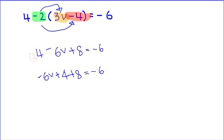So negative 6v plus 4 plus 8 is equal to negative 6. You combine like terms. As you can see, I've made my like terms together. So negative 6v plus 12 is equal to negative 6.